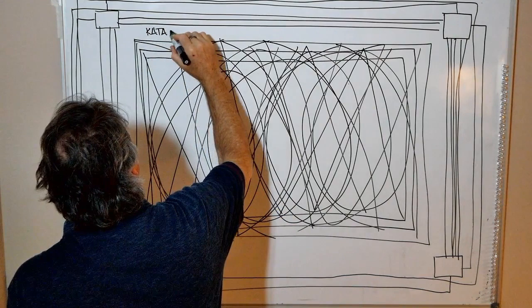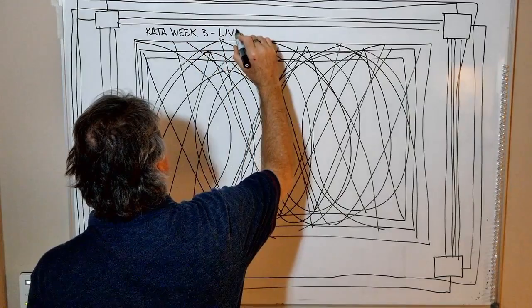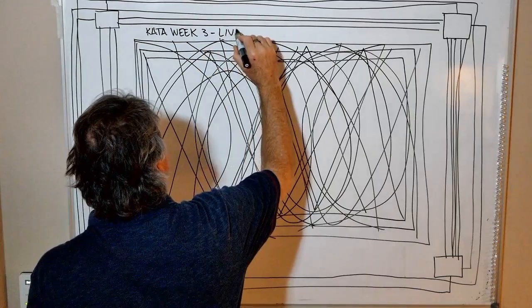Right on. So, we can finish up. Kata week three. Living large. Right on. I'm Rocket. This has been Whiteboard Katas. Have a good one.